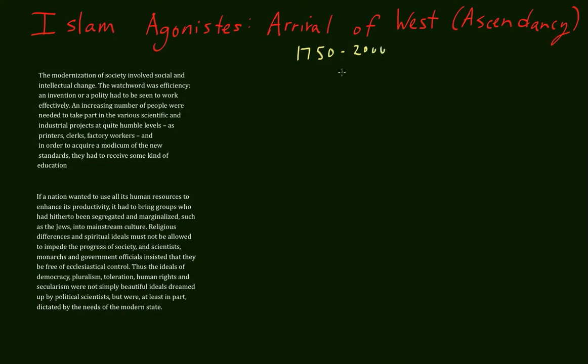First of all, what does Agonistes mean? According to Wikipedia, the word Agonistes is found as an epithet following a person's name. If found in that context, it means the struggler or the combatant. So I guess it means Islam, the strugglers, or Islam, the combatants. I'm not sure what she had in mind here, but I assume struggler is the more appropriate definition.